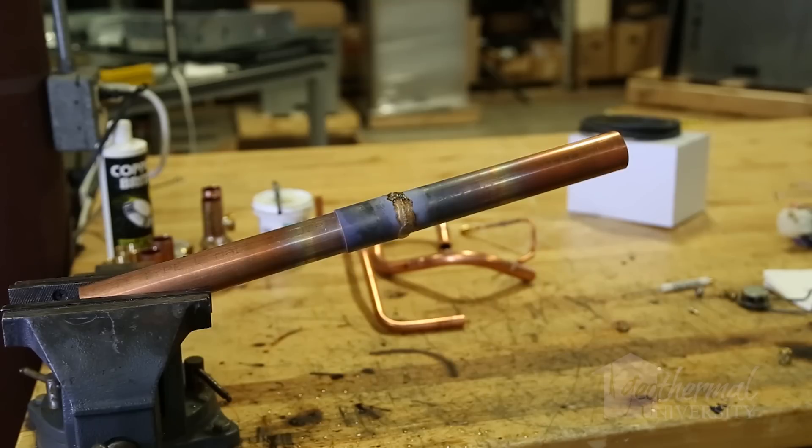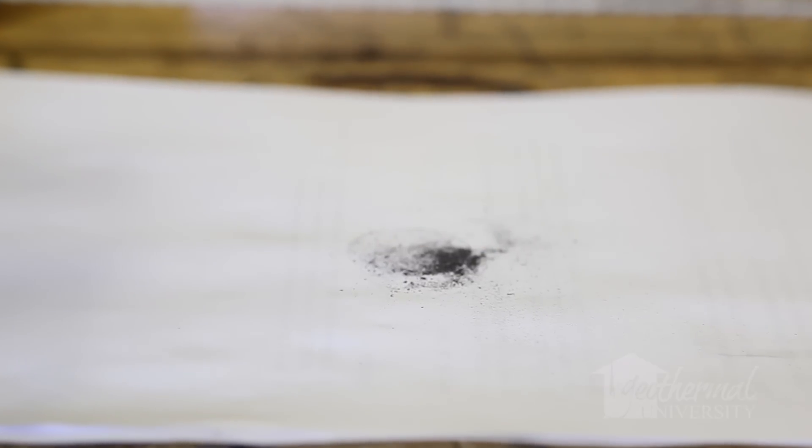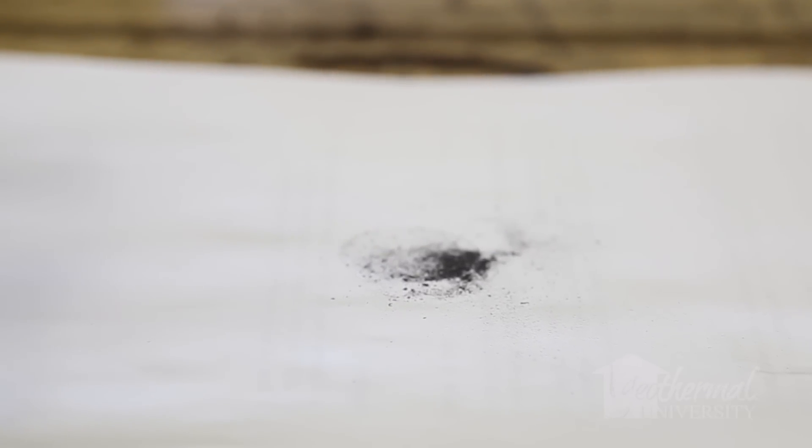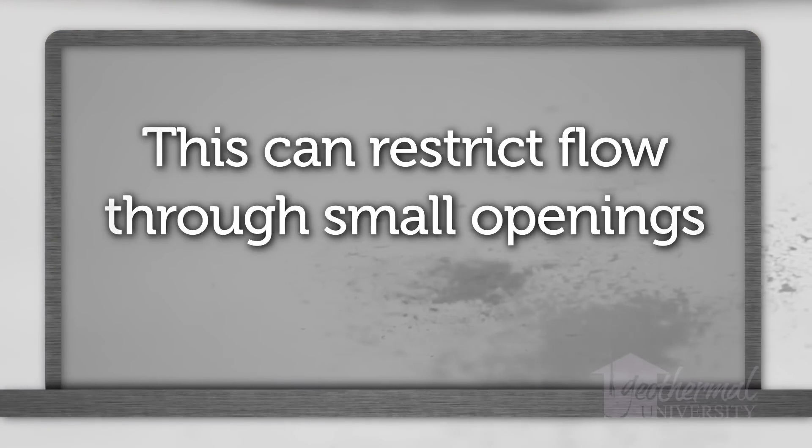While mostly cosmetic on the tube exterior, inside the tube the oxide flakes are carried by the refrigerant through the system. This contaminant can restrict flow through small orifices such as metering devices, reversing valves, TXVs, flow controls, or pilot valves.